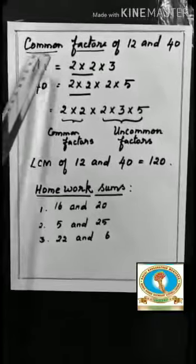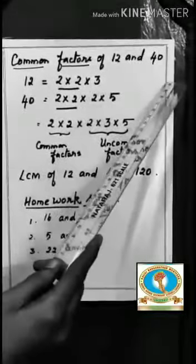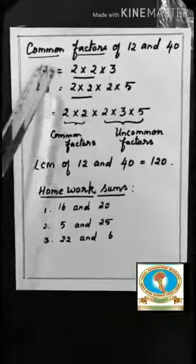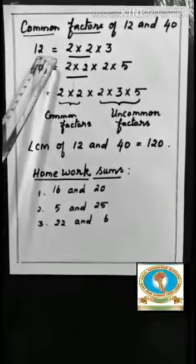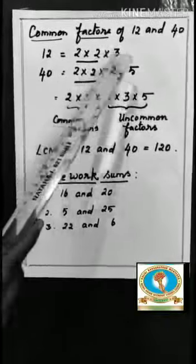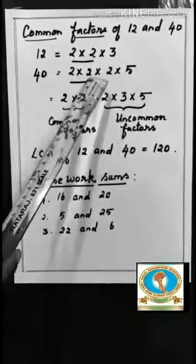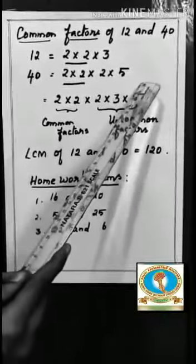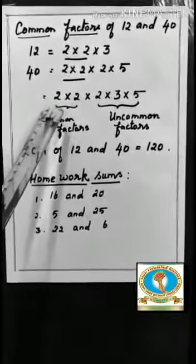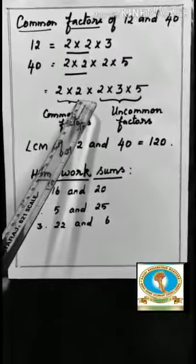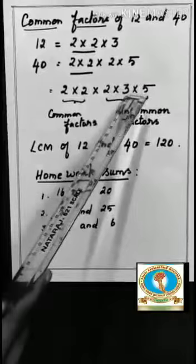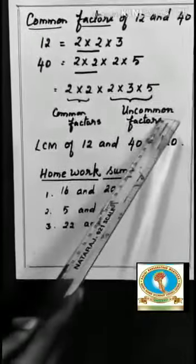Now let us find the common factors of 12 and 40. We found out the prime factorization of 12 is 2 into 2 into 3 and 40 is 2 into 2 into 2 into 5. We can see here 2 and 2 are common factors. 2 into 3 into 5 are uncommon factors.